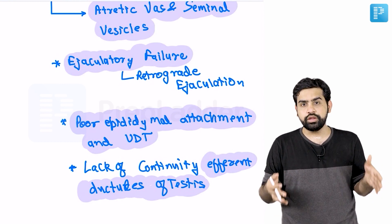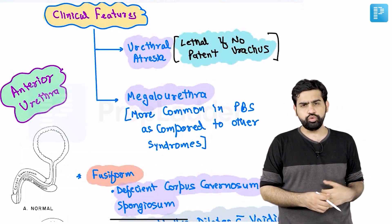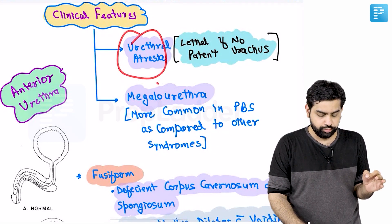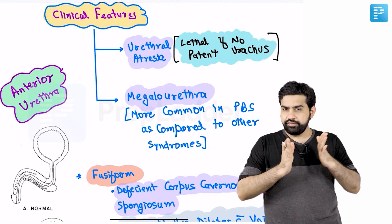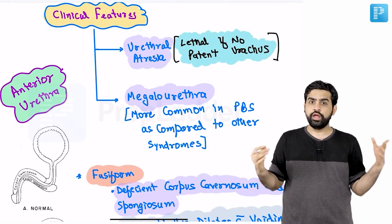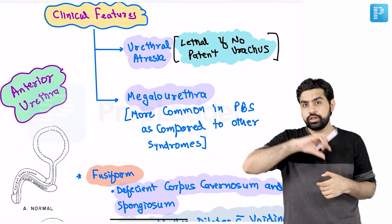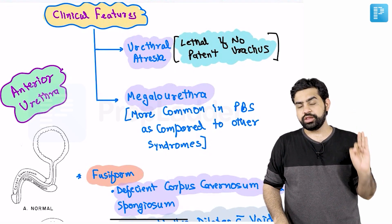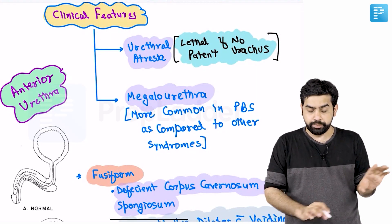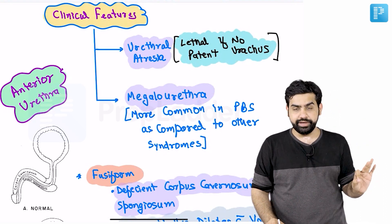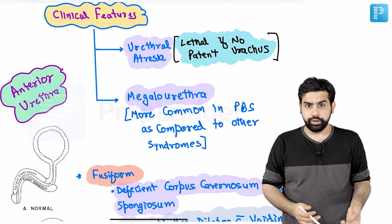Regarding the anterior urethra, urethral atresia means the urethra is not developing properly. If the urethra is absent, urine cannot exit, causing severe oligohydramnios, and the condition is usually lethal unless the urachus is patent. A patent urachus is the lifeline for these patients to survive.